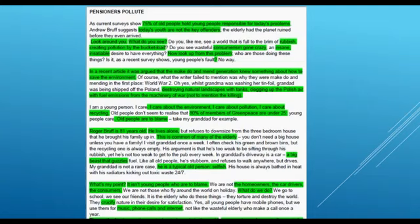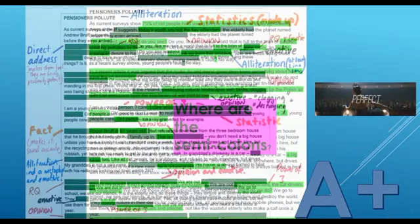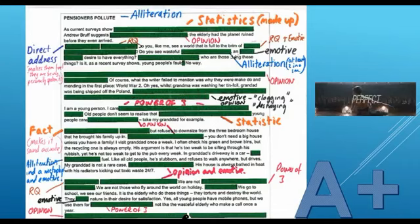As current survey shows 75% of old people hold young people responsible for today's problems. Andrew Brough suggests today's youth are not the key offenders. The elderly had the planet ruined before they even arrived. There's two and a half lines. Basically the point of them is it's a little introduction. It's almost a spoiler for the audience to know that whatever is in here is going to be explained more thoroughly in the paragraphs below. So straight away, the writer uses a statistic. We use emotive language with offenders ruined the planet, but also we use a semicolon early on to show the examiner that we know how to use advanced punctuation. Add to that point, there's also a semicolon towards the end, saying the same thing. We, so we go in by saying we now had a semicolon and we also end it by saying we now had a semicolon.